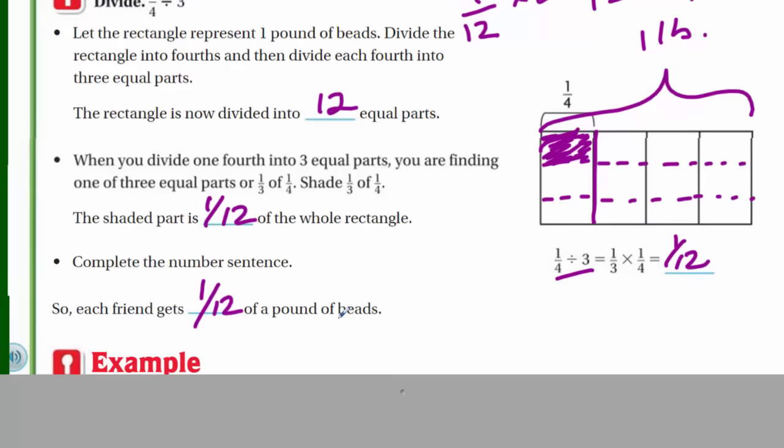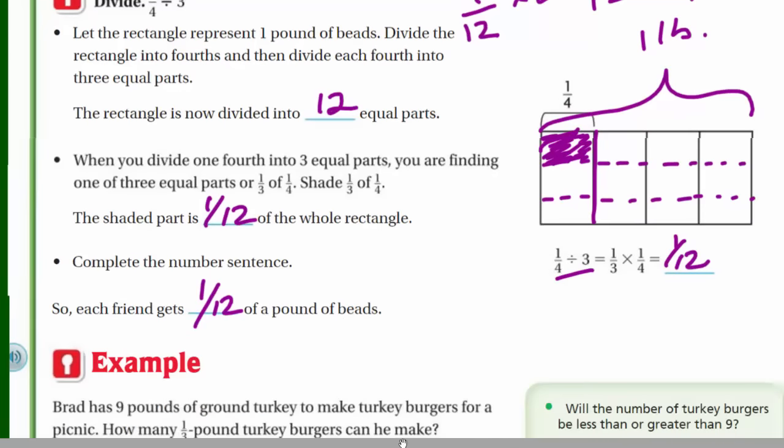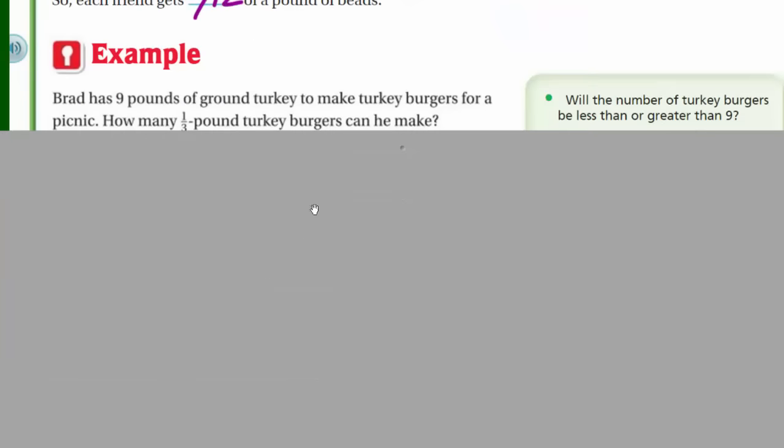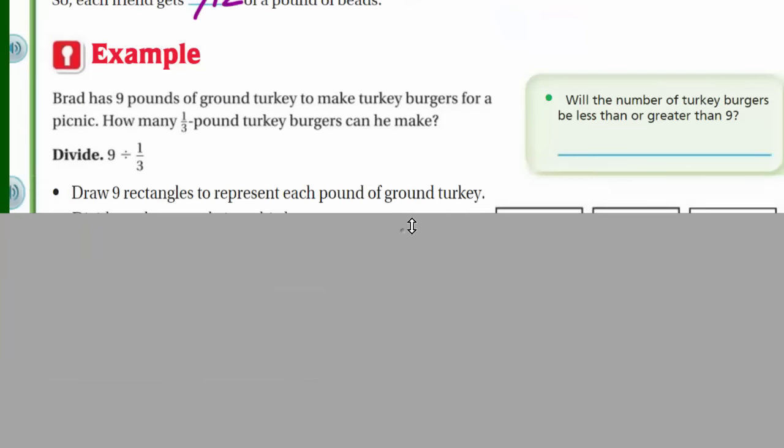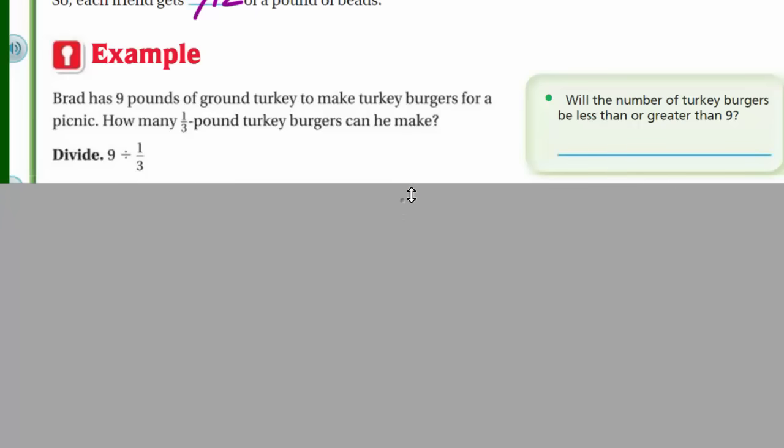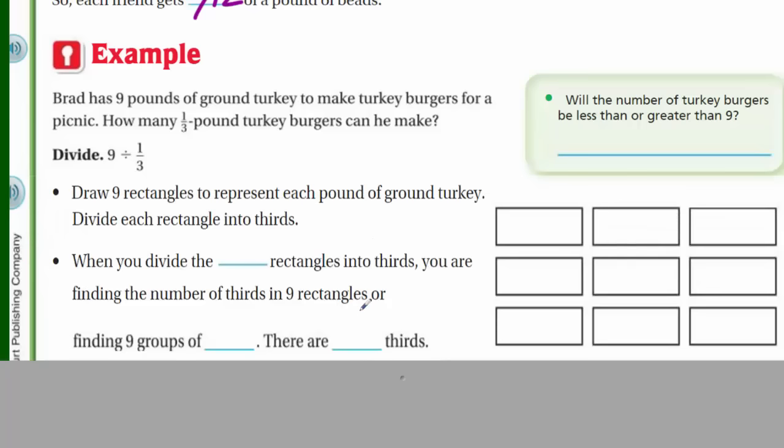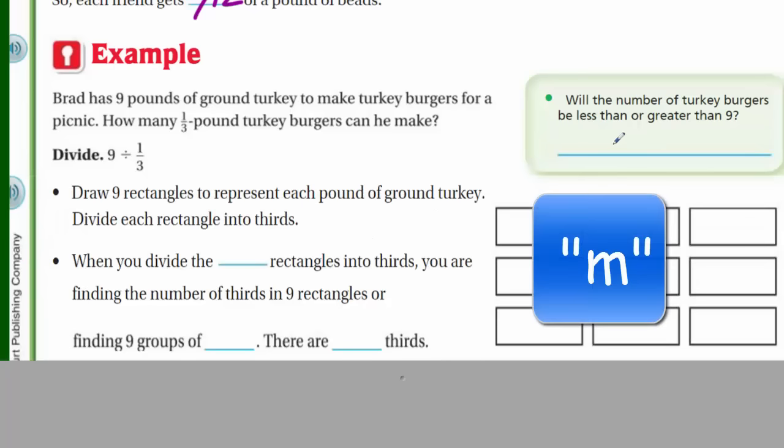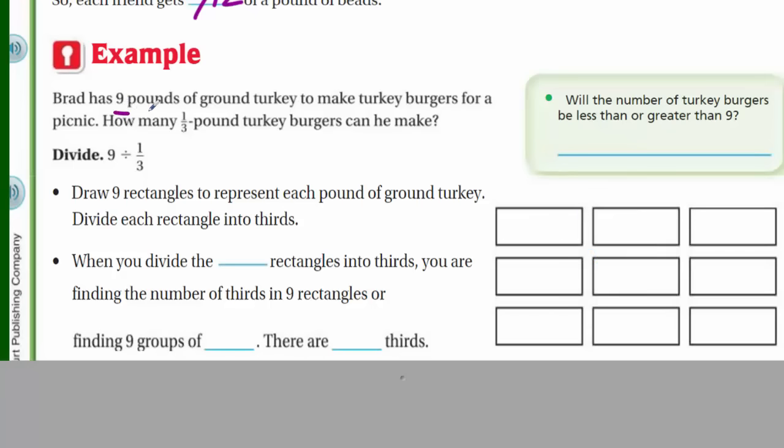So are we okay? My goodness, is that already one page? We're just flying through this stuff here. What does it say down to your example? Brad has nine pounds of ground turkey to make turkey burgers for a picnic. How many one-third pound turkey burgers can he make? Will the number of turkey burgers be less than or greater than nine?